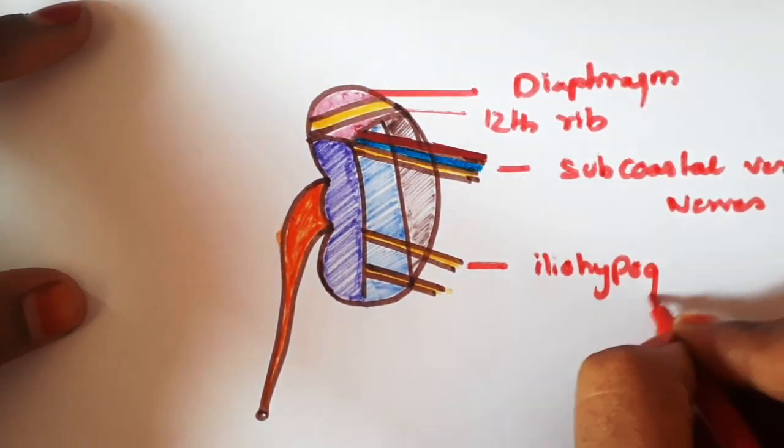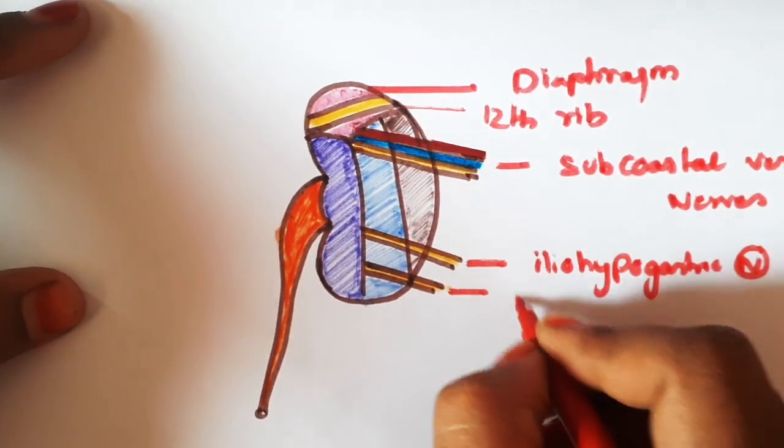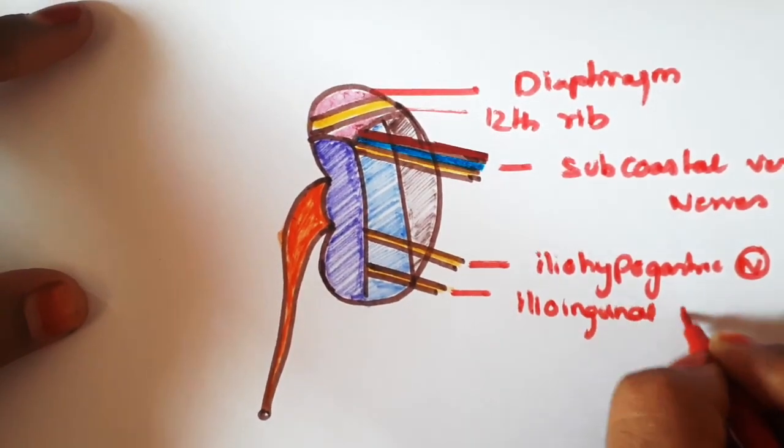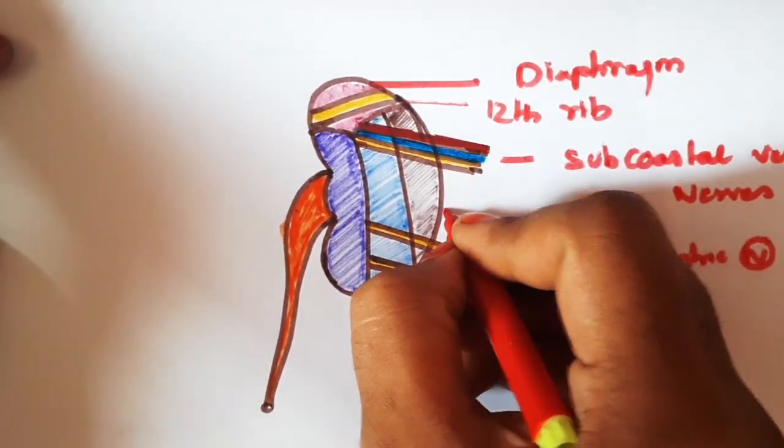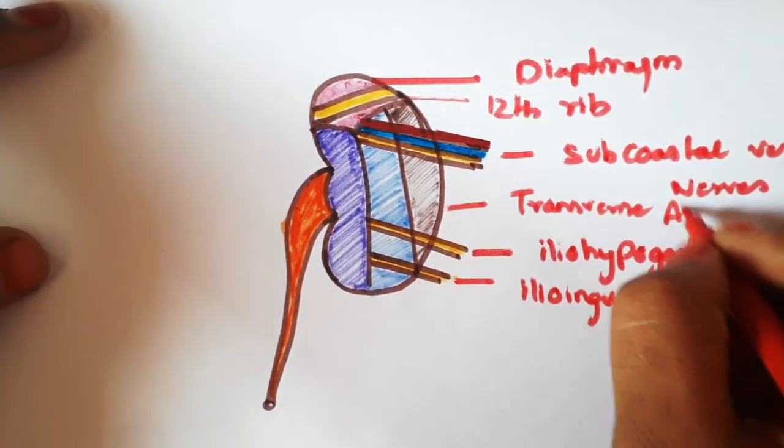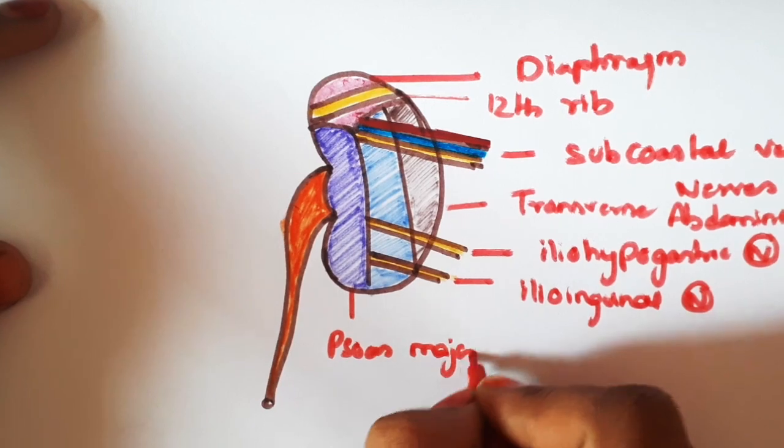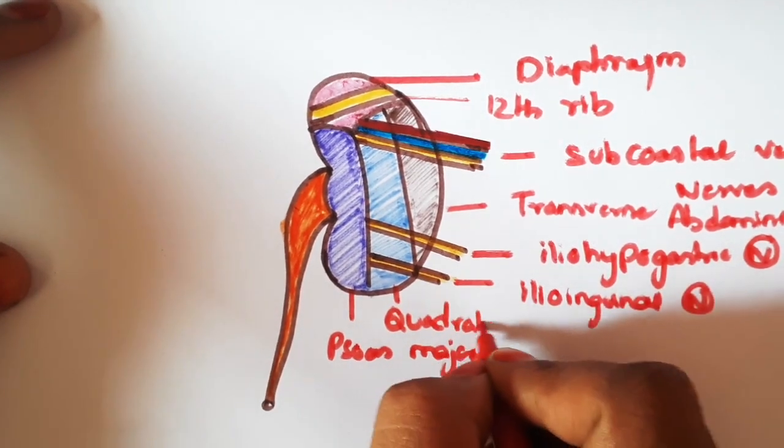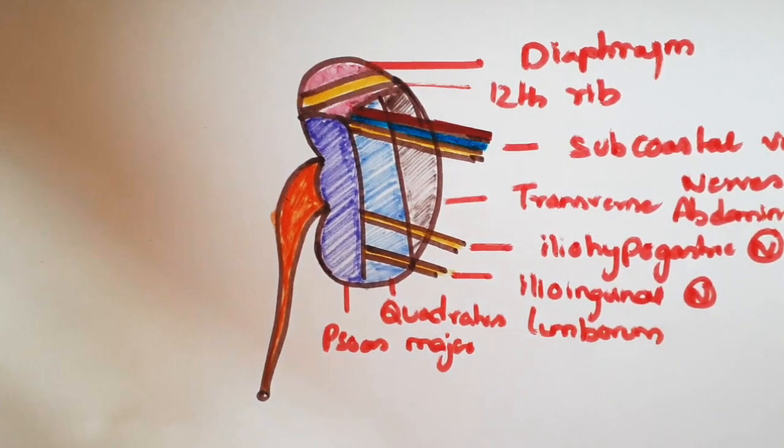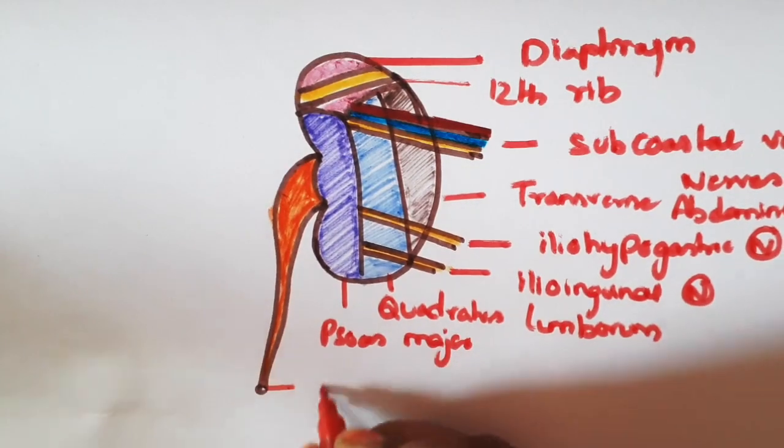This is the iliohypogastric nerve. This is the ilioinguinal nerve. This is the transversus abdominis muscle. There are three muscles which form the posterior abdominal wall: psoas major and quadratus lumborum. This is the ureter.